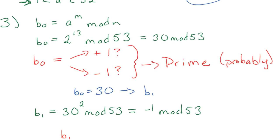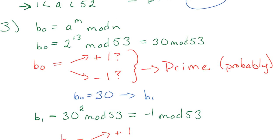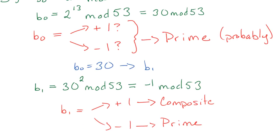So for b1, what we're asking is the same as before. Is it positive 1 or is it negative 1? However, the implications at this point are different. So positive 1 tells you that the number is composite or not prime. Negative 1 tells you that it's prime. Now I'll add probably again, since it's not absolutely for sure.